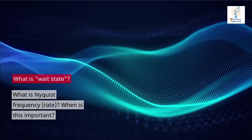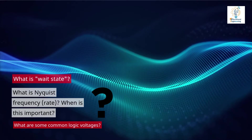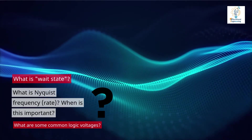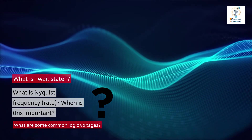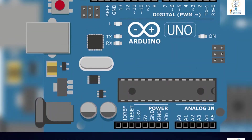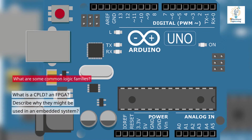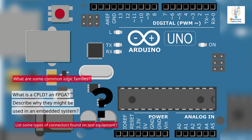What is tri-state? What is Nyquist frequency or rate? When is this important? What are some common logic voltages? What are some common logic families? What is a CPLD? An FPGA? Describe why they might be used in an embedded system.